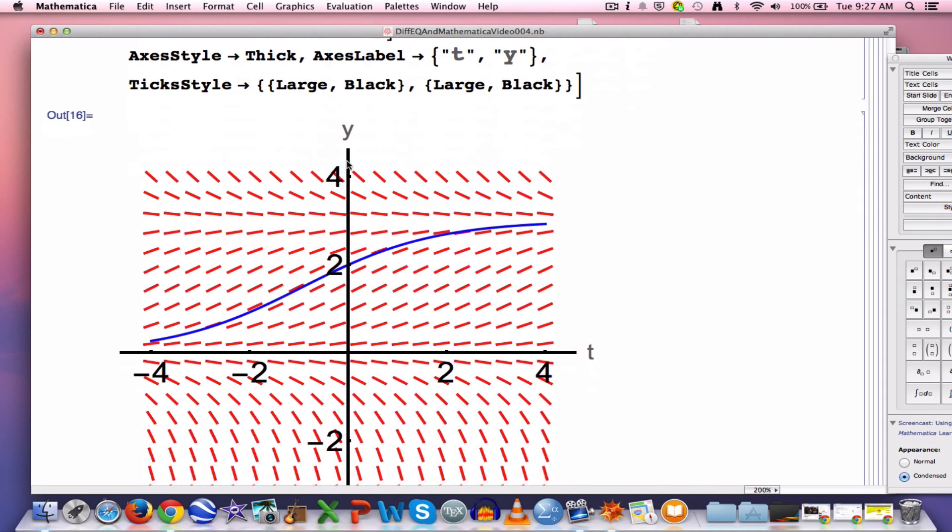So again, here's the slope field. You do see it's constant along horizontal lines because it's an autonomous differential equation. And there's your solution that we found for the initial value problem. You can see it also goes to the point y[0] = 2, the point (0, 2). And I'll end the video there.